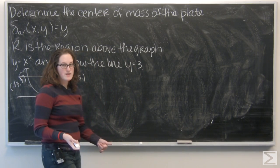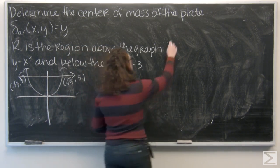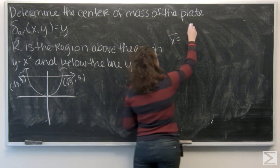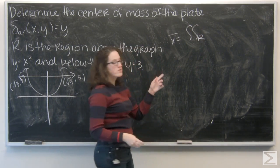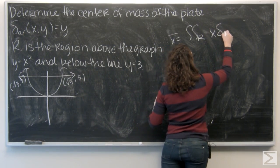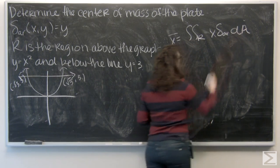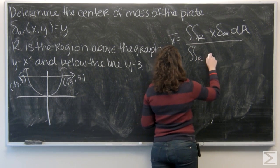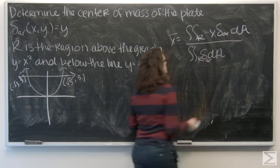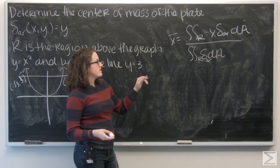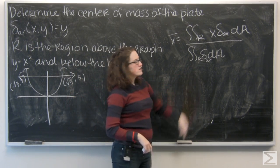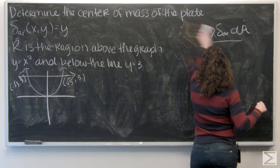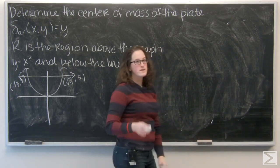Let's think about how we find the center of mass of something. I have x-bar or y-bar — they're pretty much interchangeable. I have a double integral over the region of x times the area density dA, divided by the integral of the area density over the region. Let's start off finding this denominator.